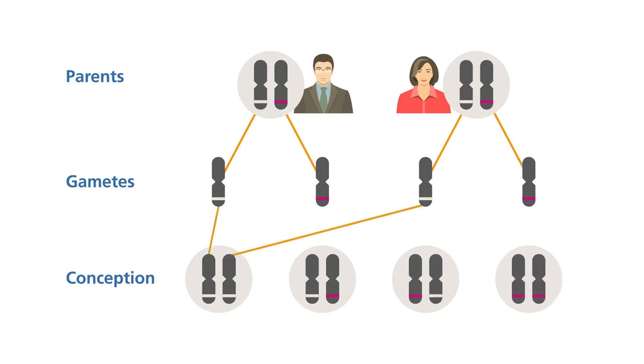The first combination shows where a chromosome with the usual gene has been inherited from each parent. This child will not have the condition and will not pass on the altered gene for the condition to their children.